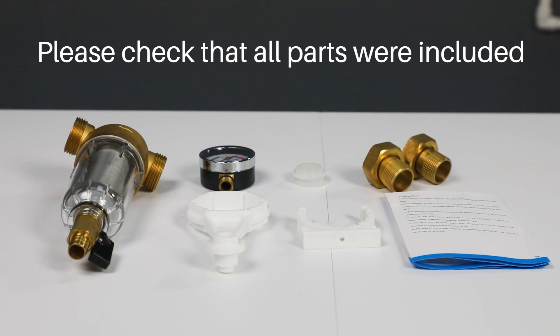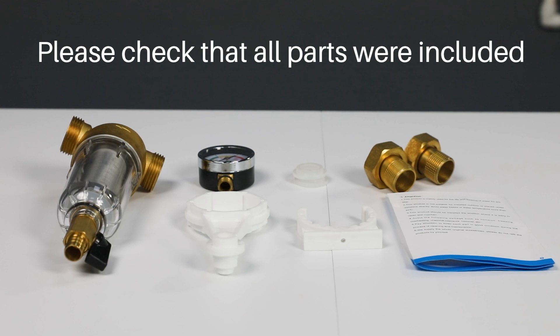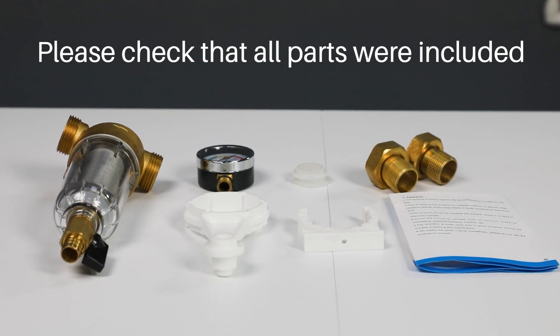Before installation, please check that all parts were included in the package: HGS-25 Spindown Filter, Pressure Gauge, Housing Wrench, and Drain Connector.